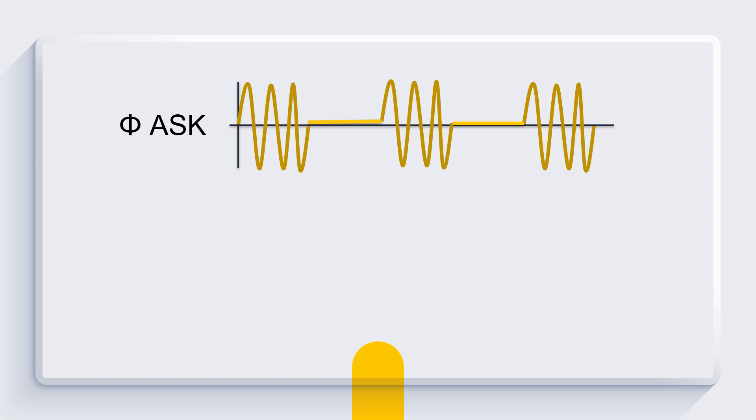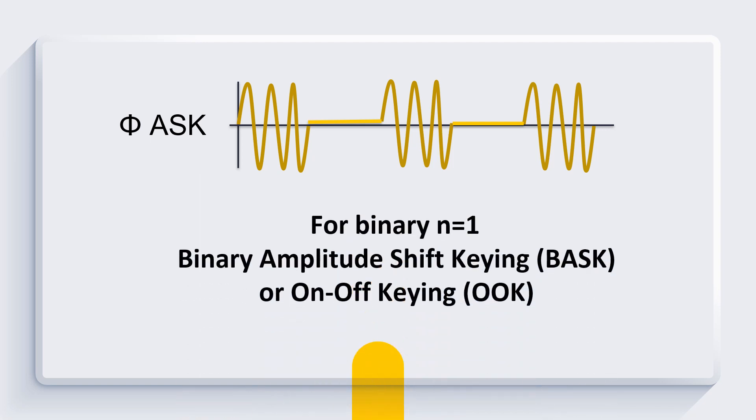Based on this, we can justify that the amplitude of carrier signal varies with respect to the amplitude of message signal. In this case, for binary where n equals 1, it is also referred as binary ASK, or binary amplitude shift keying, or for another term, on-off keying, or OOK.